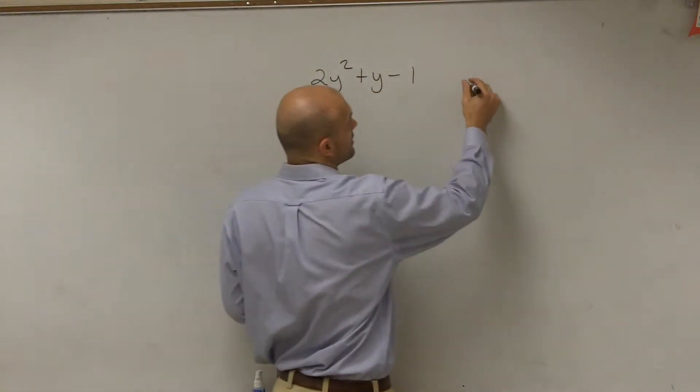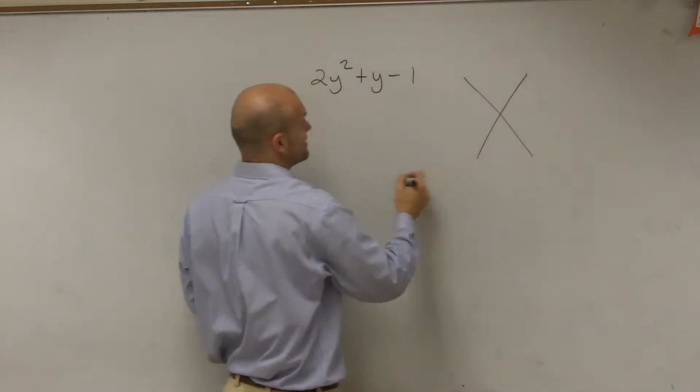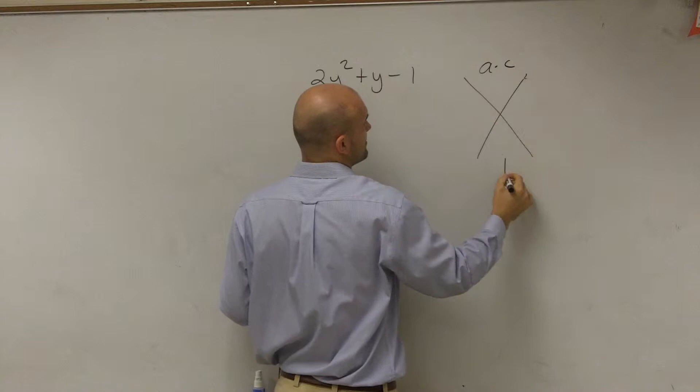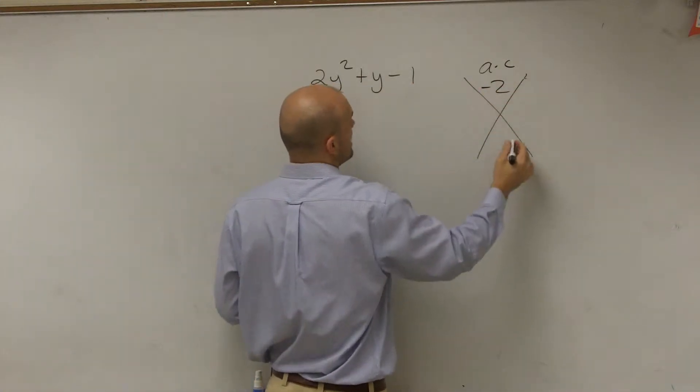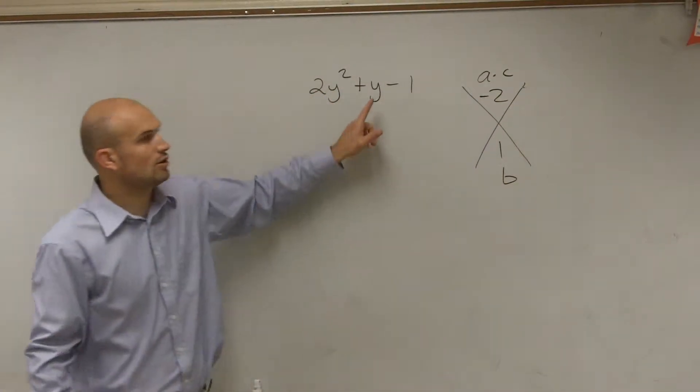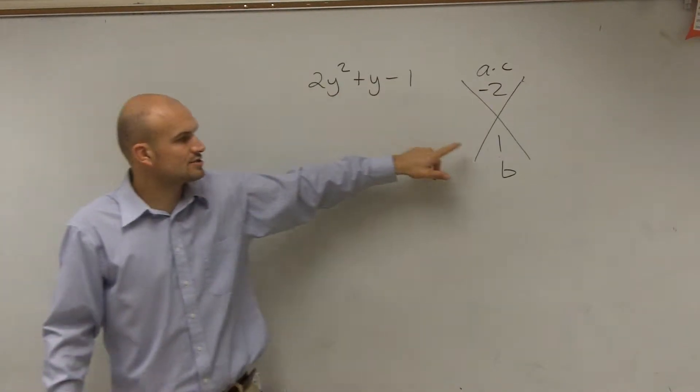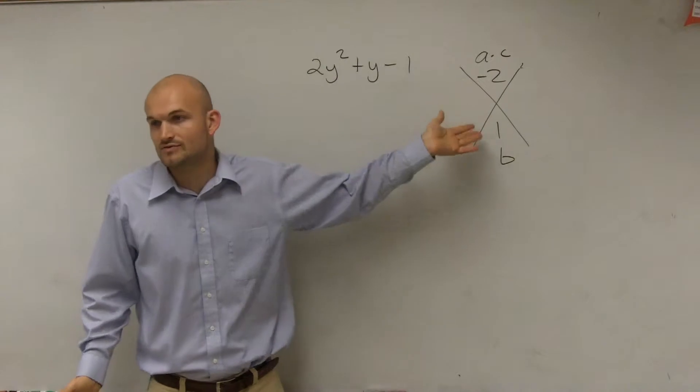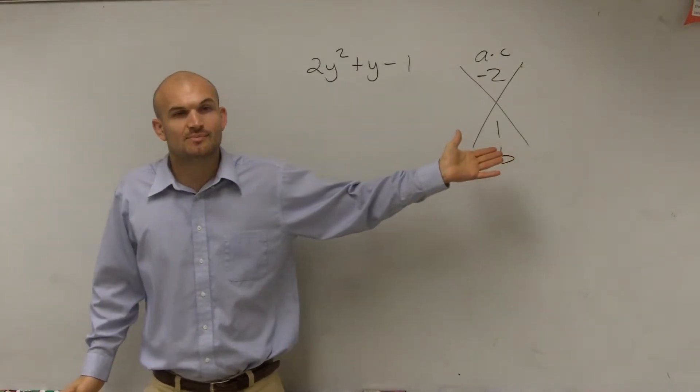So what we're going to do is, to help us with the factoring method, I'm going to do a times c and then put b on the bottom. a times c is negative 2, and my b is 1, because the coefficient on my y is just going to be 1. So now I'm going to think about what are all the numbers that multiply to give me negative 2 but then add to give me positive 1.